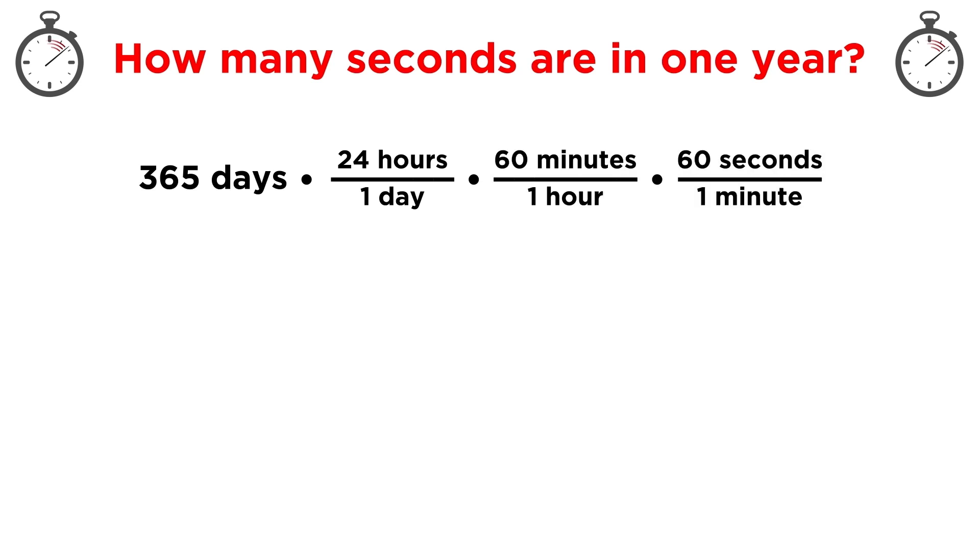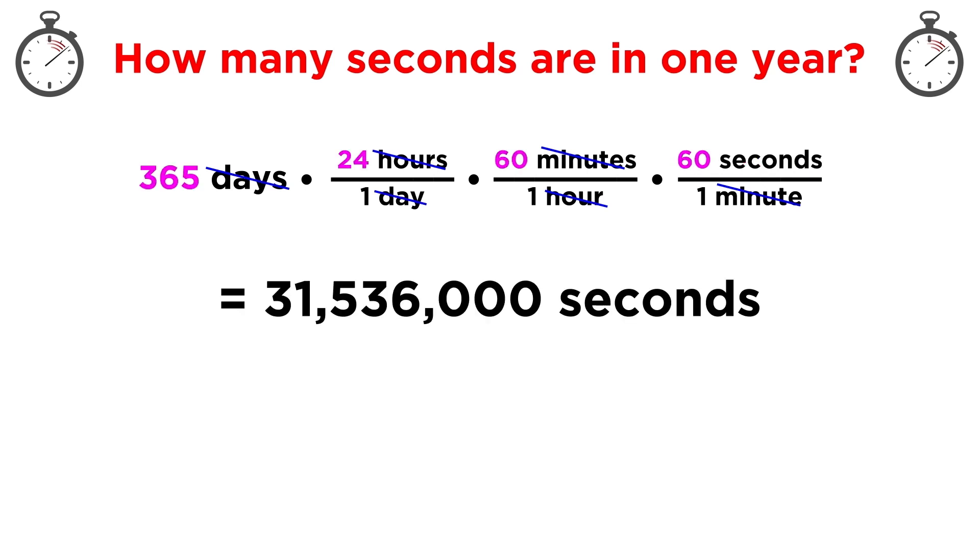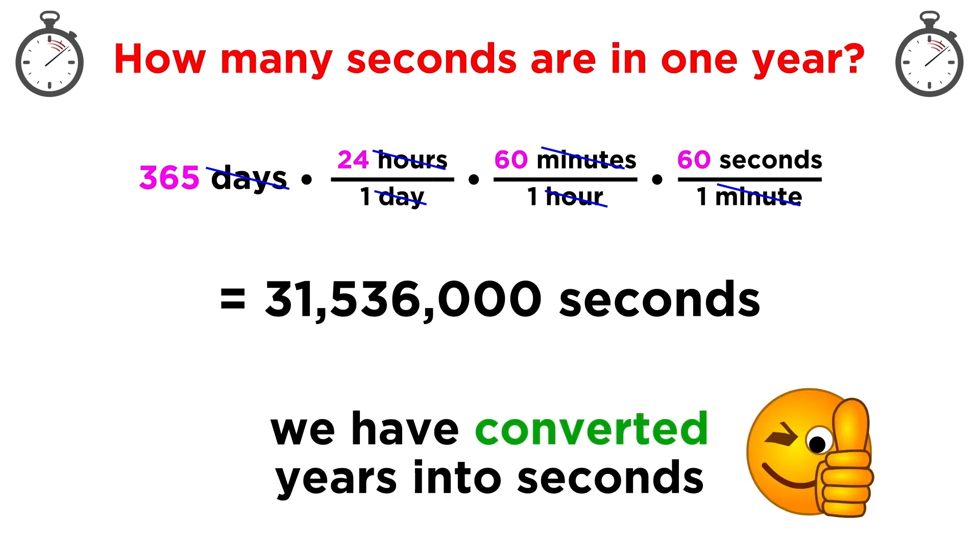We are left with some basic arithmetic to do, whereby we can see that all the units cancel out except seconds, and we just multiply the numbers to get our answer. We have successfully taken a particular measurement of time and converted it into a different unit using dimensional analysis, such that it can be expressed another way.